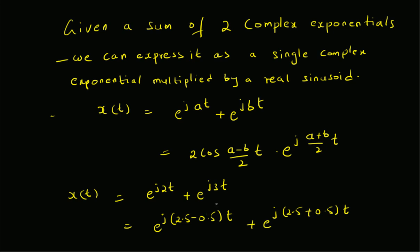That is, we write 2 as 2.5 minus 0.5 and 3 as 2.5 plus 0.5. So clearly (a plus b)/2 is 2.5 and (a minus b)/2 is 0.5.